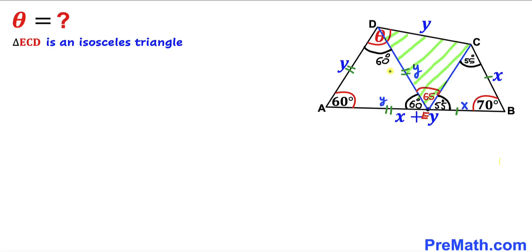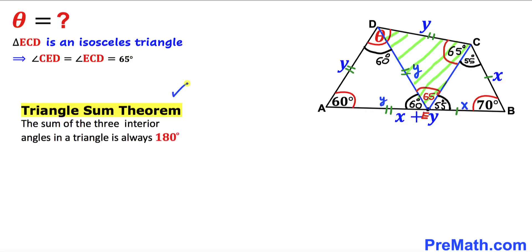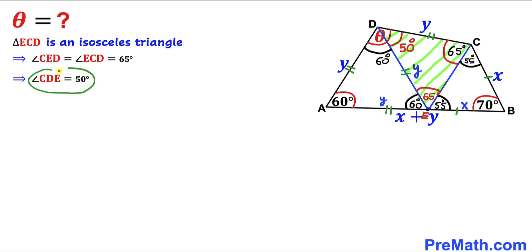Focusing on triangle ECD, this is also an isosceles triangle since ED equals DC equals y units. Therefore angle CED equals angle ECD, both are 65 degrees. By the triangle sum theorem, the remaining angle CDE must be 180 − 65 − 65 = 50 degrees.